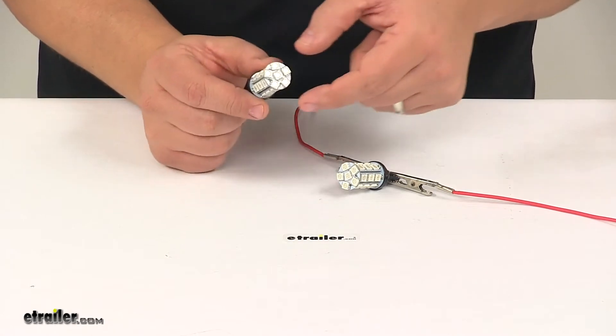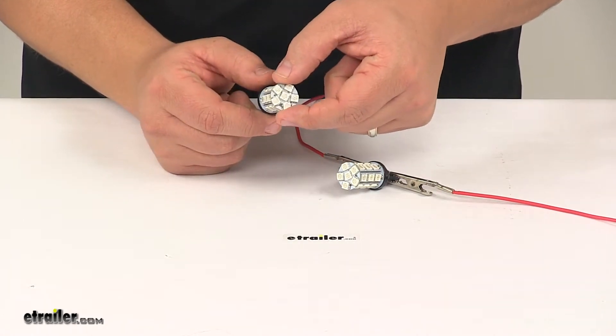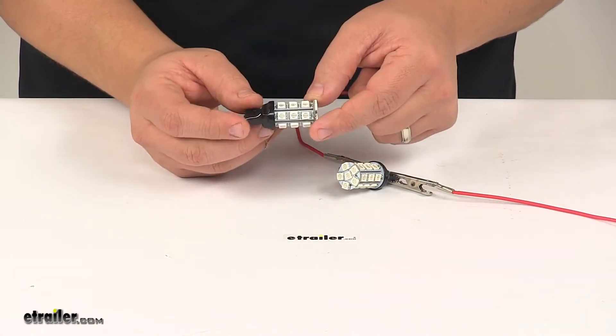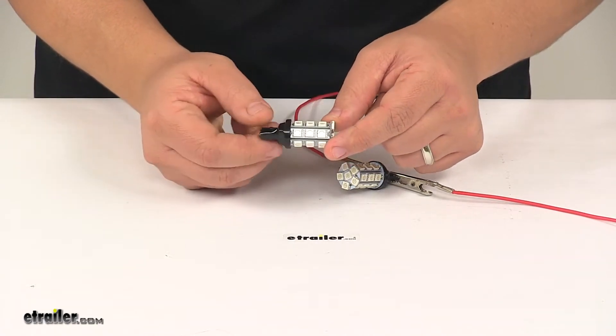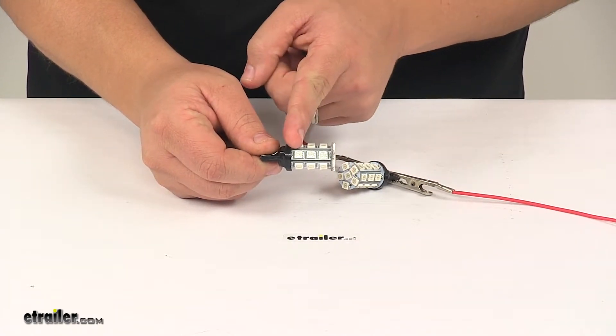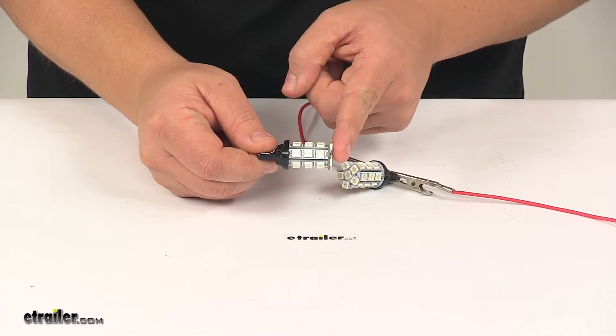When it comes to the dimensions, the bulb area, which is this post right here, has a diameter of three quarter inches. Overall length is about one and fifteen sixteenths of one inch long, and from the top of the base to this point right here is about one and one eighth.